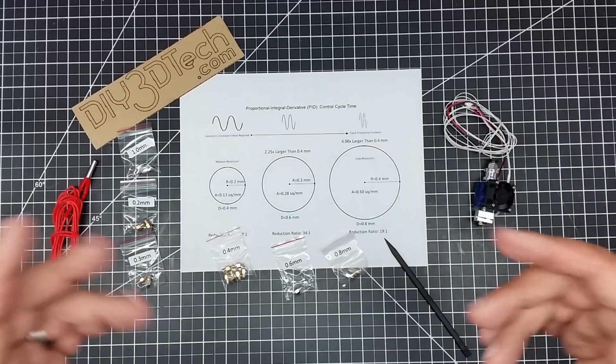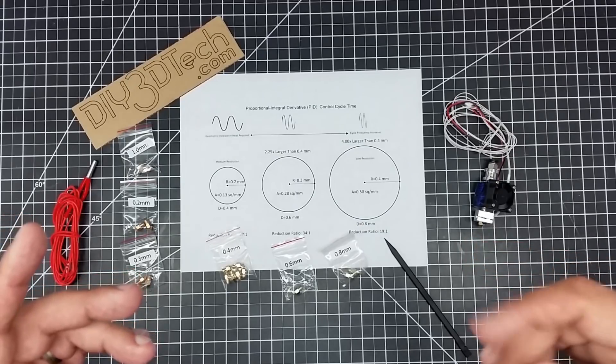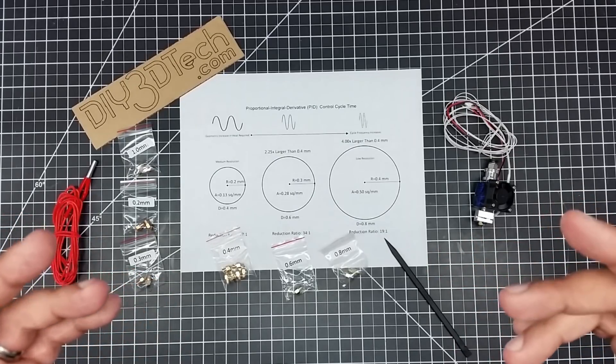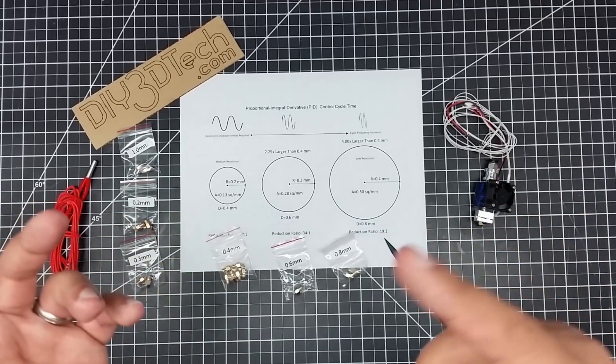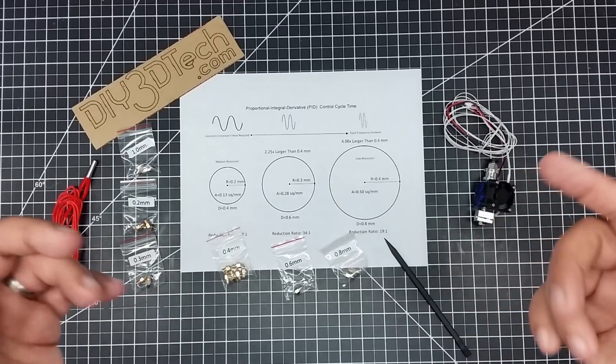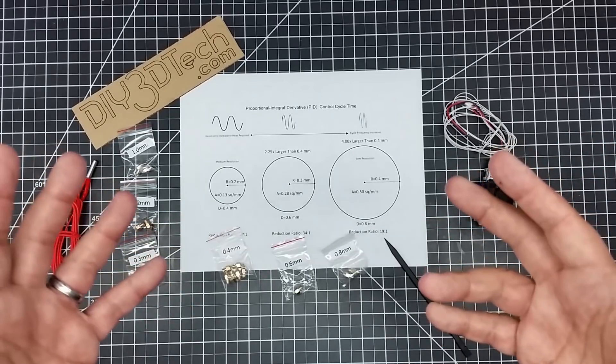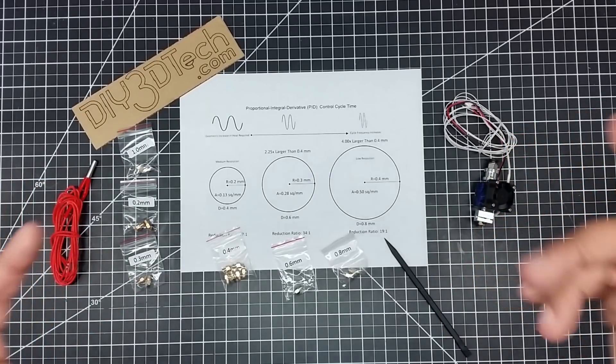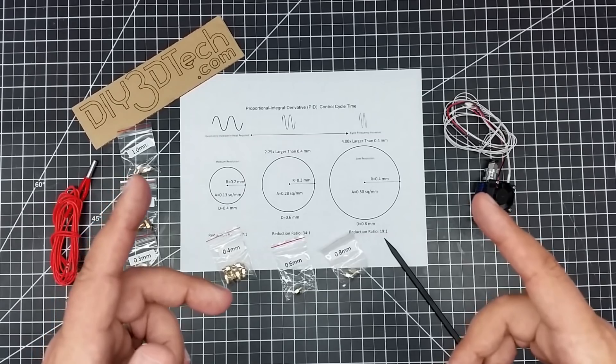So typically it comes with about a 0.4 nozzle. And a lot of folks are going up to 0.6 or 0.8. And there's a lot of questions because like over on the CNC kitchen, he went with the volcano nozzle. Why do you have to do that? Can't you just put a new nozzle on the hot end and go for it? Well, yes, you can, but let's talk about what you might run into by doing that.